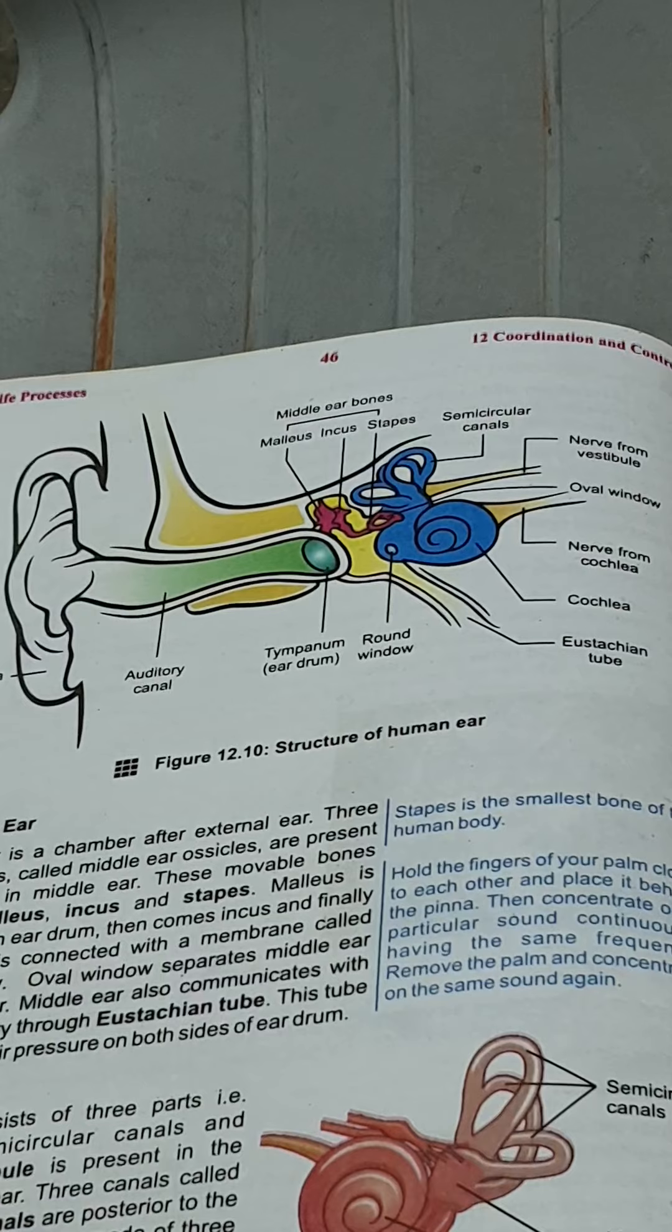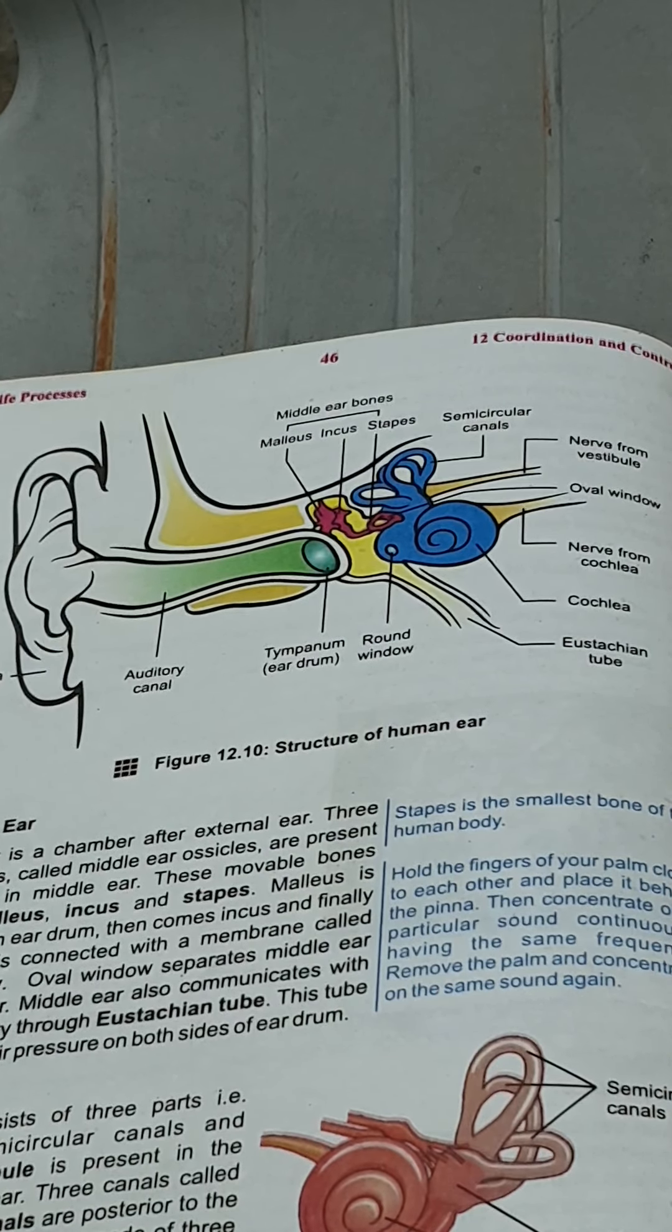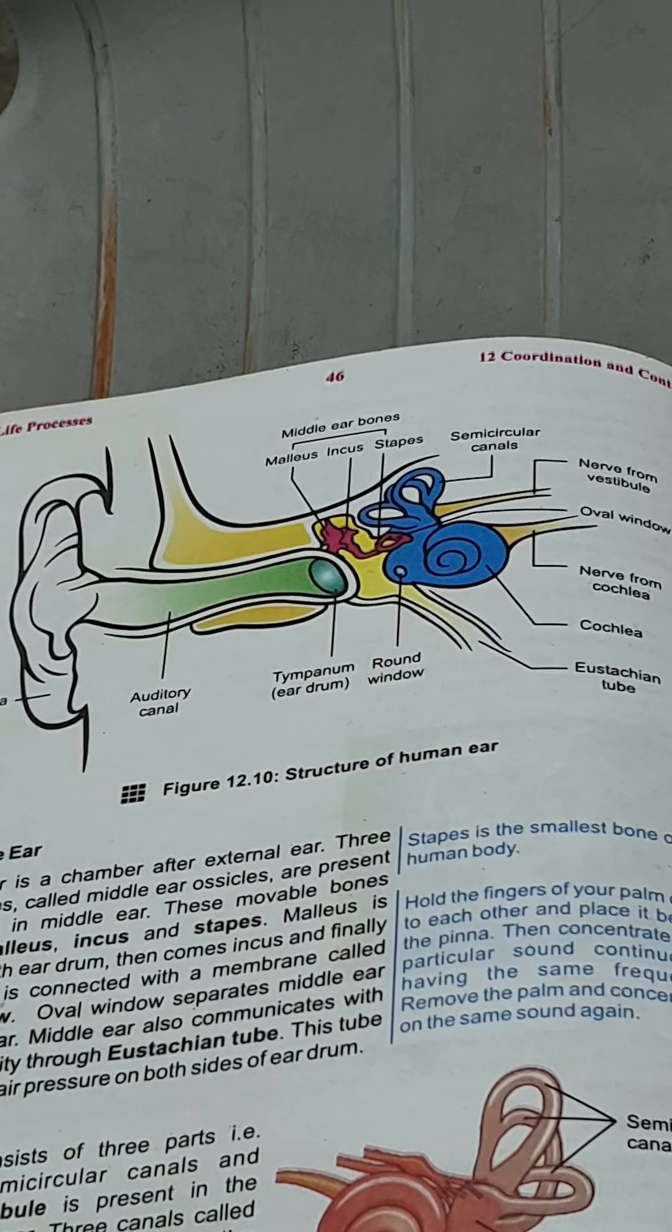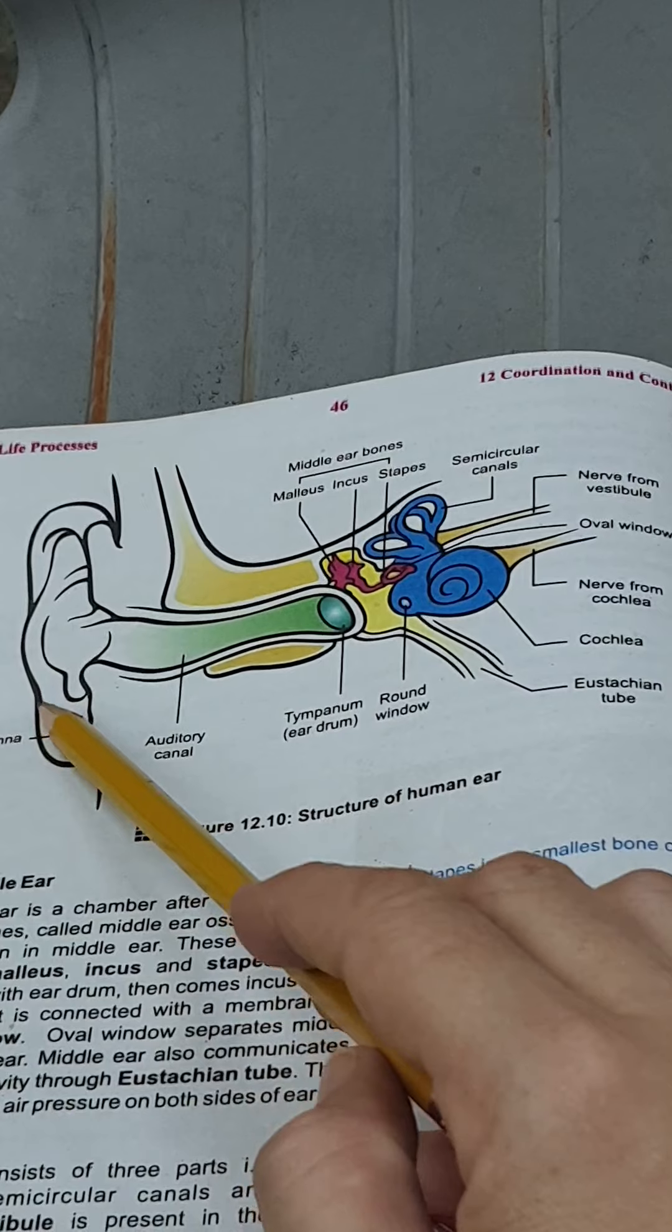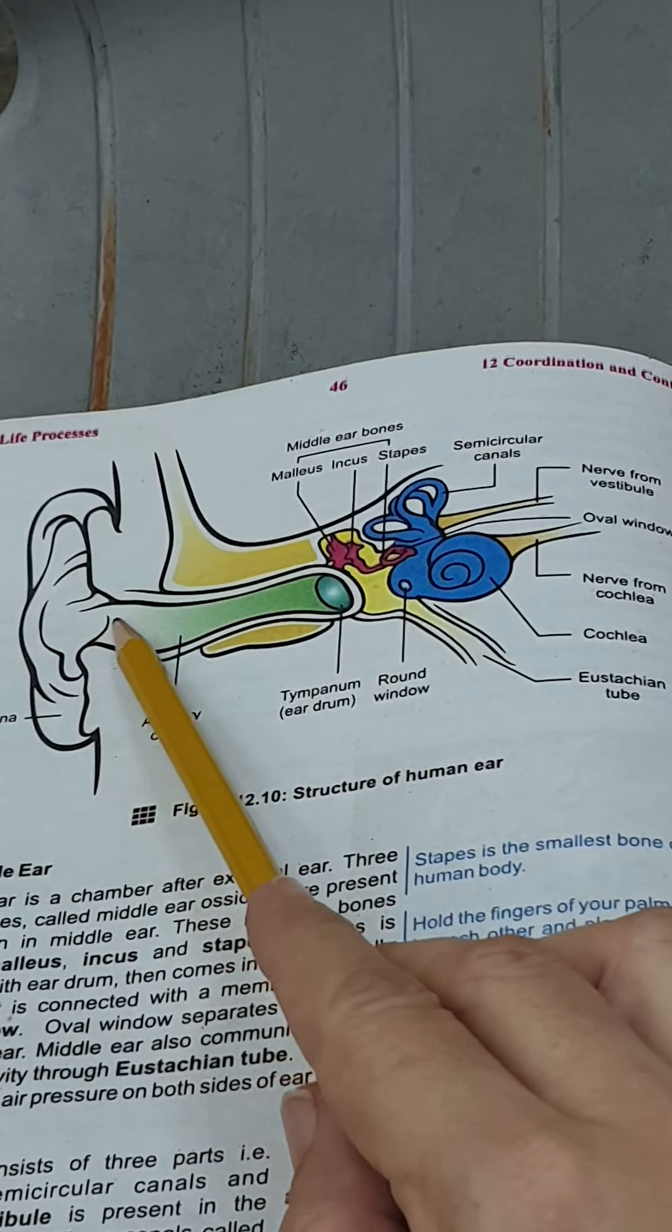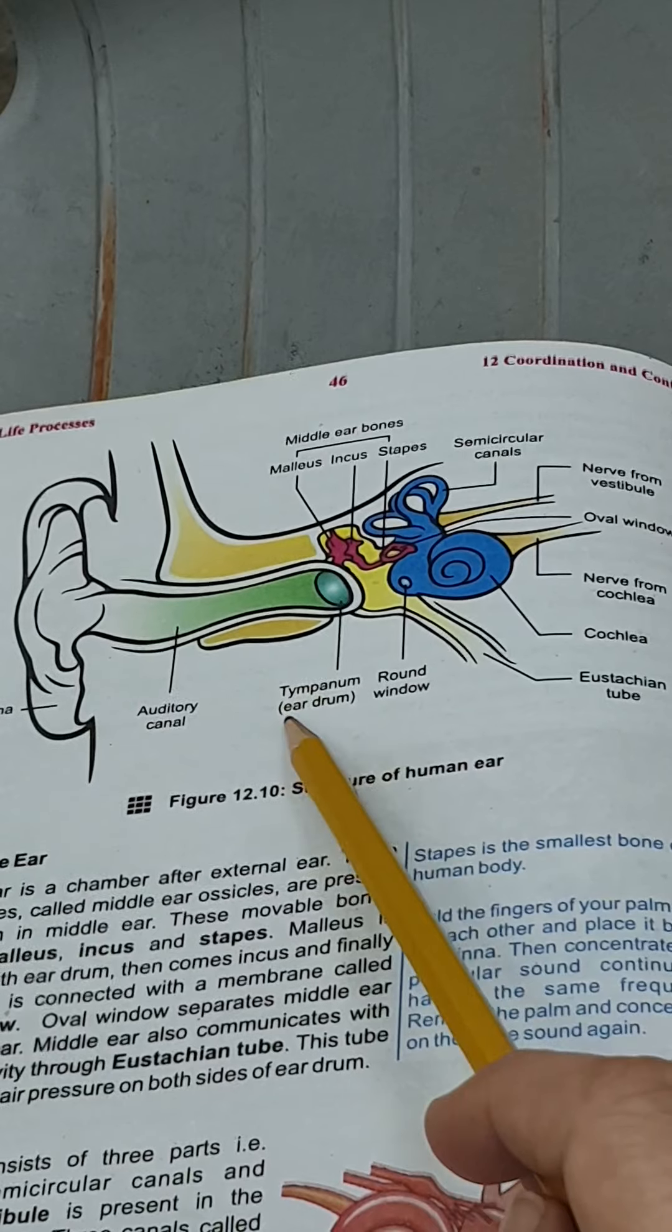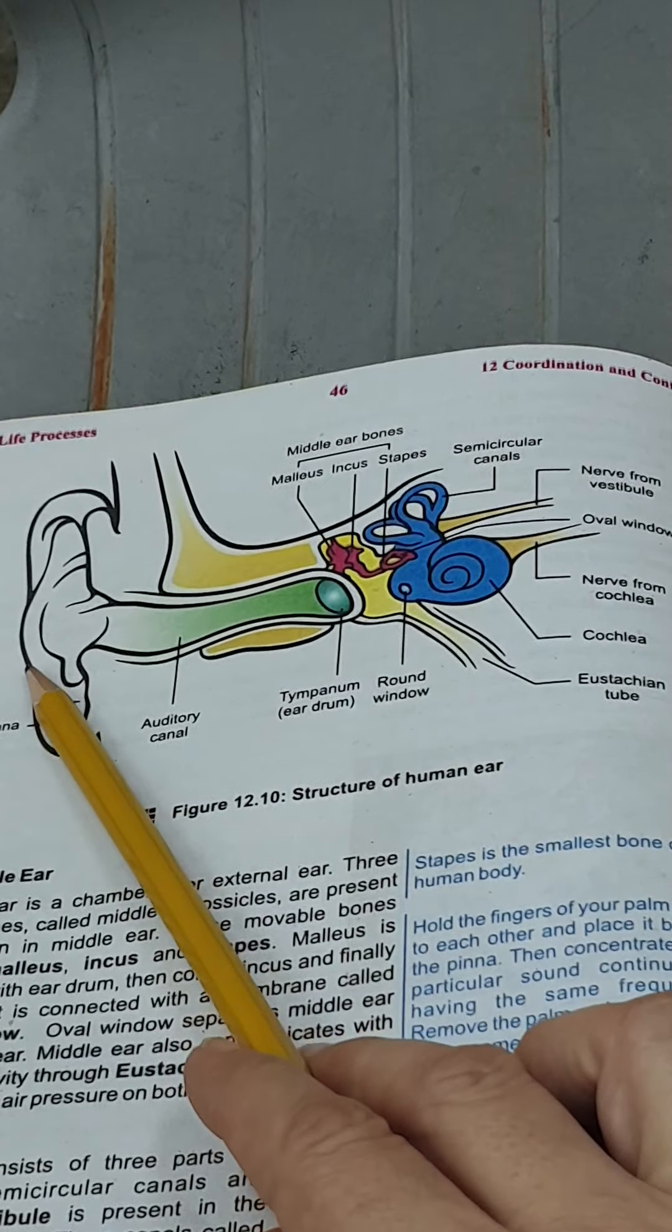The human ear is divided into three basic parts: the outer ear, the middle ear, and the inner ear. The outer ear consists of pinna, the auditory canal, and a special membrane known as tympanum or eardrum. So these three parts are included in the external ear.